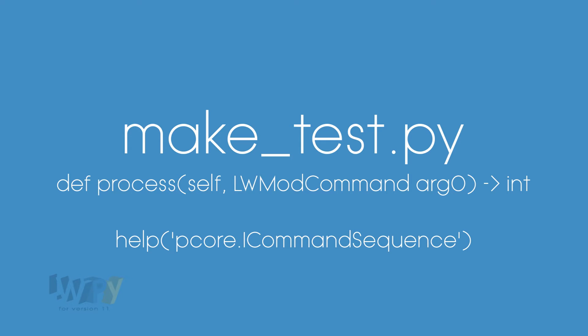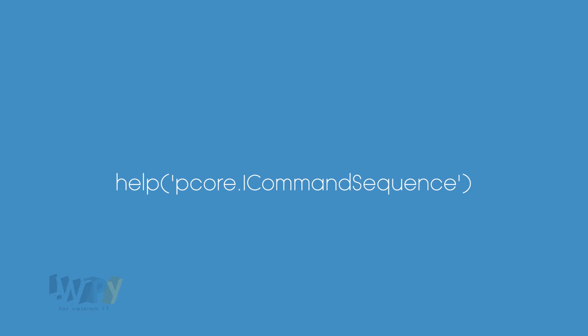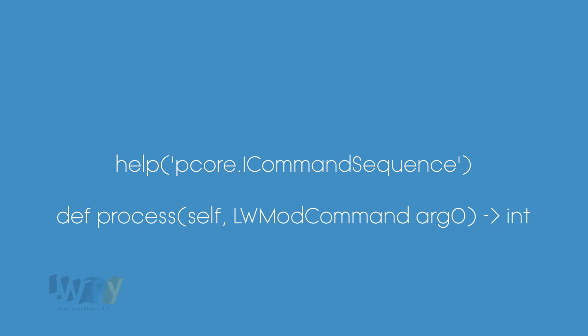In the PCOR console, type... From the console output, we can see that the process method takes two arguments: self, and the LightWaveModCommand argument. It then returns an integer value. But what's this LightWaveModCommand?